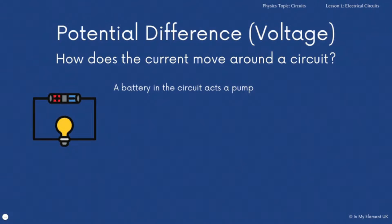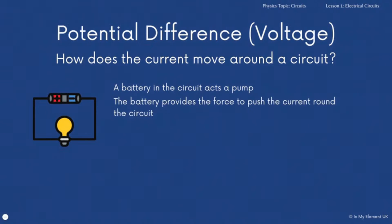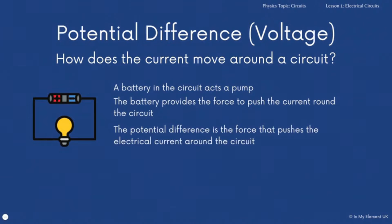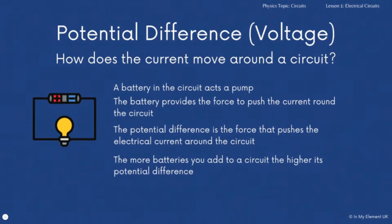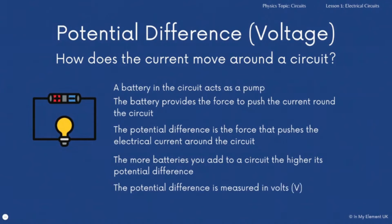That pump provides enough force to push the current — the negatively charged electrons — around the circuit. The potential difference is the force that pushes that current around the circuit. If you add more batteries, there is more force to push the current around the circuit. You can have more than one battery. Think of different electrical items you use: some remote controls take two batteries, some take three, and they work on different sizes — double A or triple A — and they have different potential differences. The key point is that the potential difference is measured in volts, and the symbol is a capital V.